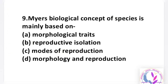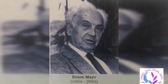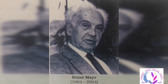Question number 9: Mayr's biological concept of species is mainly based on — option A: morphological traits, B: reproductive isolation, C: mode of reproduction, D: morphology and reproduction. The answer is D, morphology and reproduction. Ernst Mayr is also called the 'triple crown of biology' and the 'Darwin of the 20th century.'